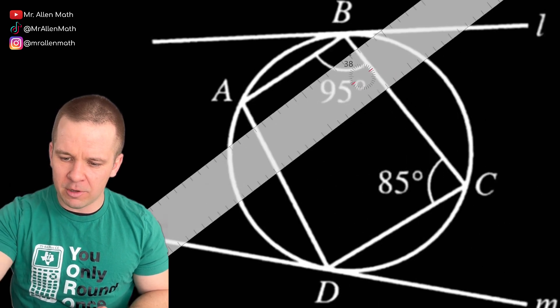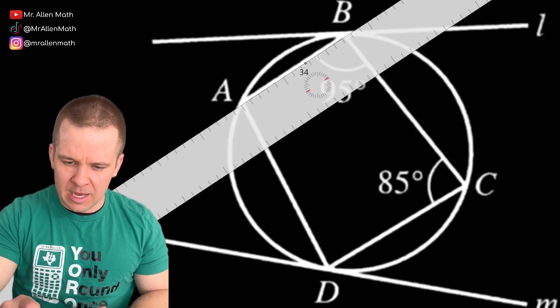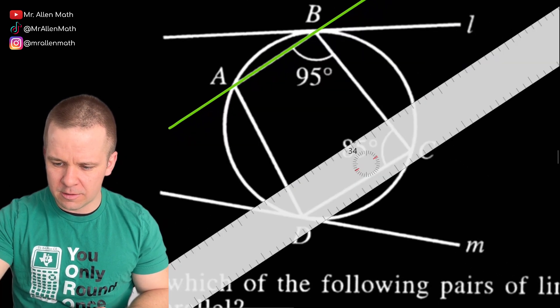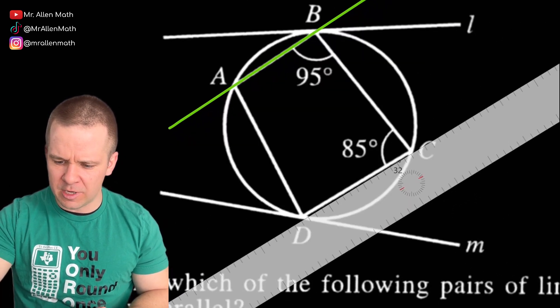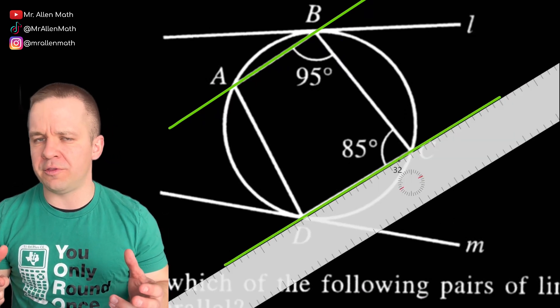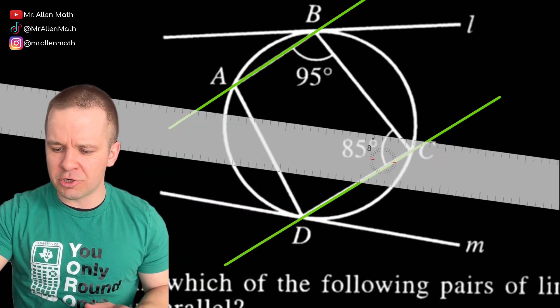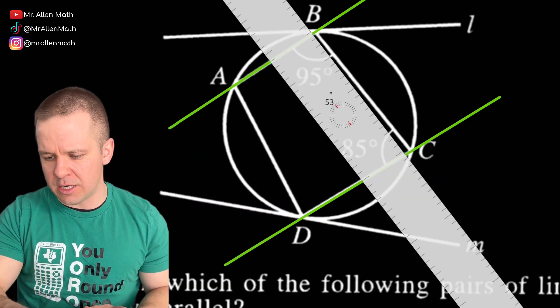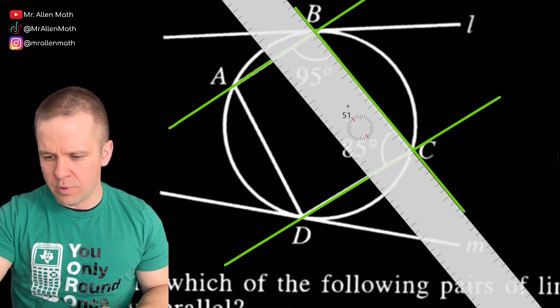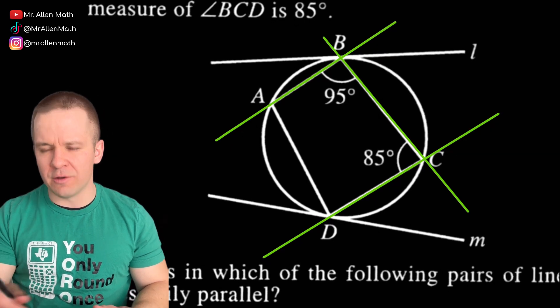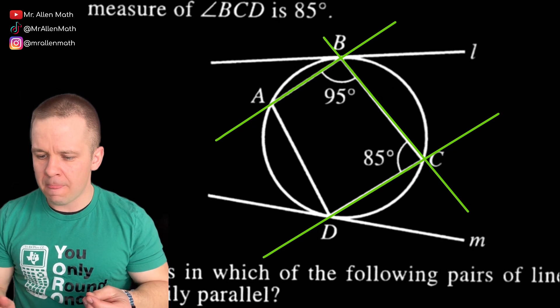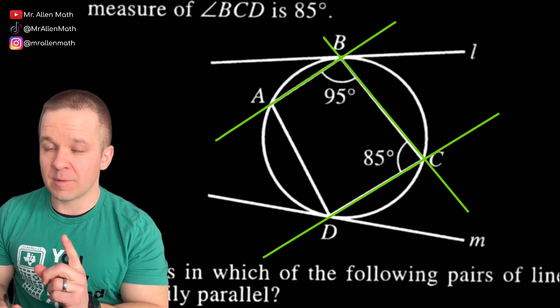The question is the lines in which of the following pairs of lines are necessarily parallel. I feel like they could have worded that a little less confusing, but anyways, is it L and M, AB and DC, AD and BC, or any combination of those it looks like in choices D and E. So it could be all of them. Who knows? Well, let's take a look. And I'm just going to go with the given information currently, and I'm going to pop my ruler on though.